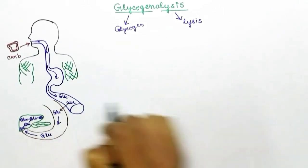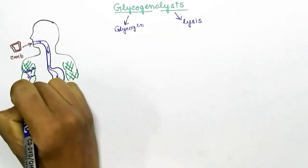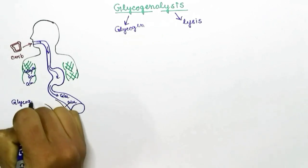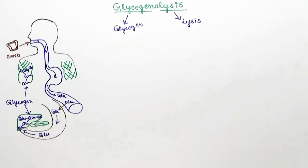Our body stores the excess glucose as glycogen. The glycogen is stored in muscle and liver cells. During fasting, when the blood glucose level drops, the glycogen gets converted back into glucose to make up the glucose level in the blood.